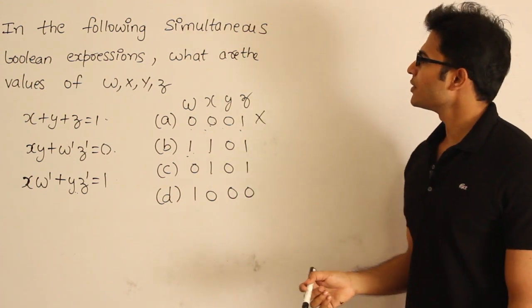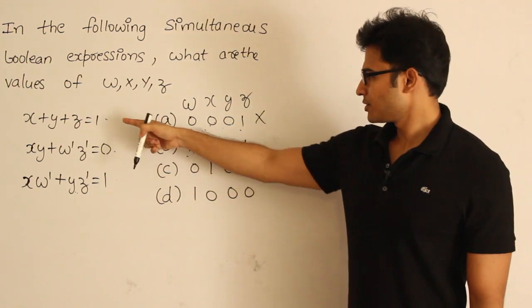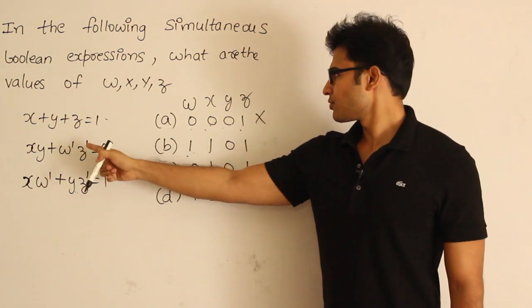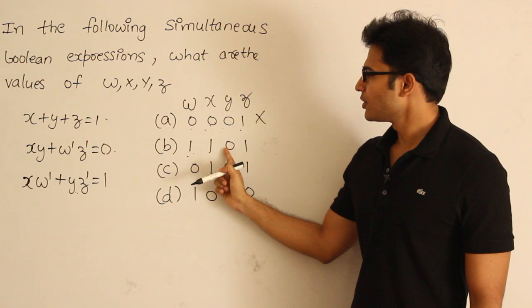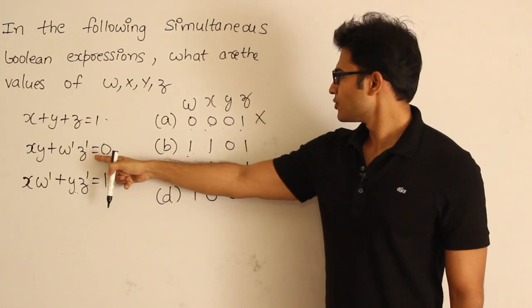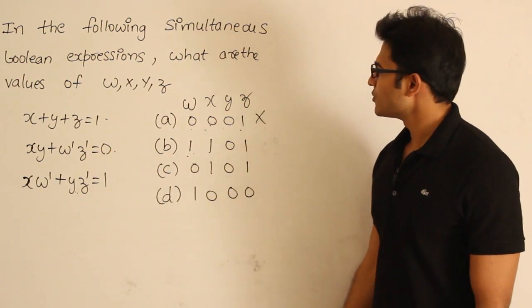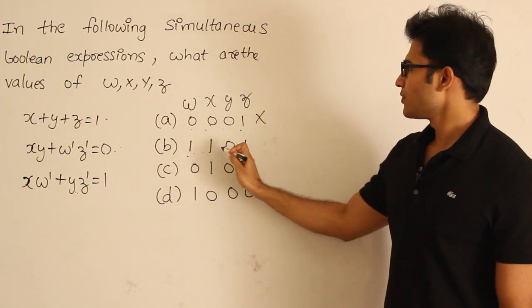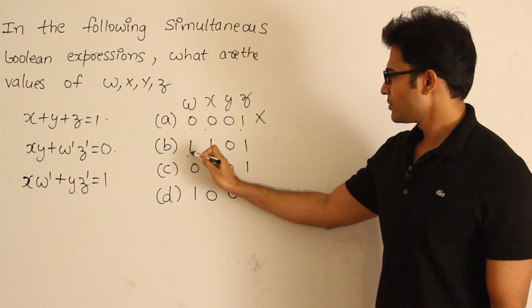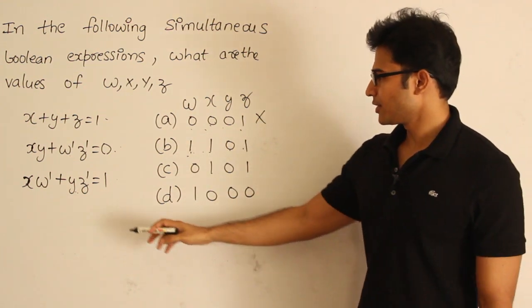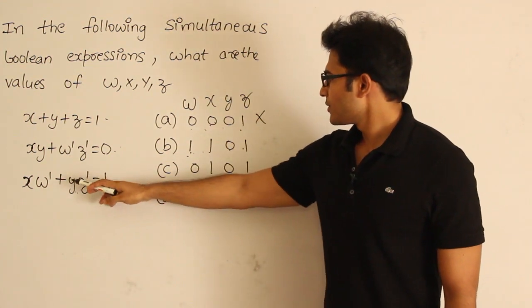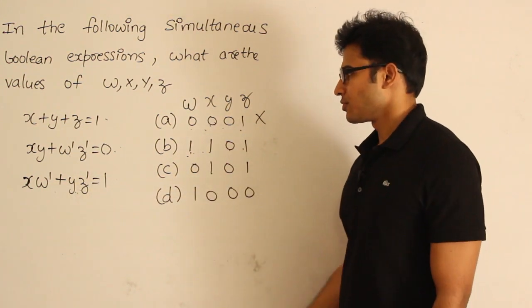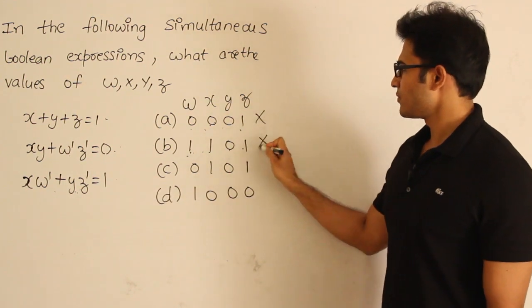Now for the next candidate x, y, w, x, y, z: putting the values into x plus y plus z gives 1, so the first equation is verifying. For the second, x·y is 0 and y' is 0, and z' is 0 — it is verifying. x·y is 0 and w' is 0, z' is 0 — verifying. For the last one, x·w' is 0 and y·z' is 0 — not verifying.